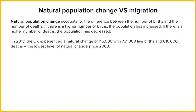In 2018, the UK had a natural increase. There were 731,000 live births and 616,000 deaths, so the difference between those two numbers is a positive number of 115,000.